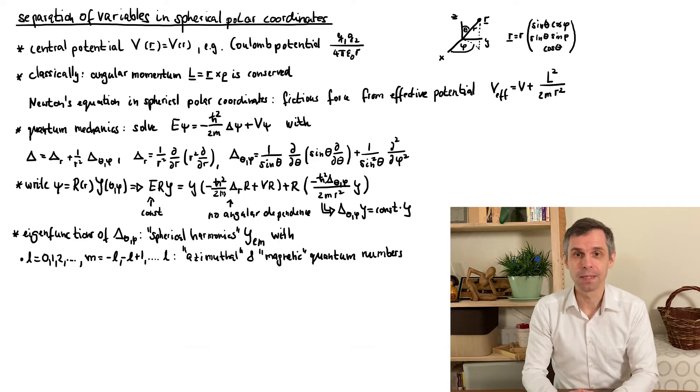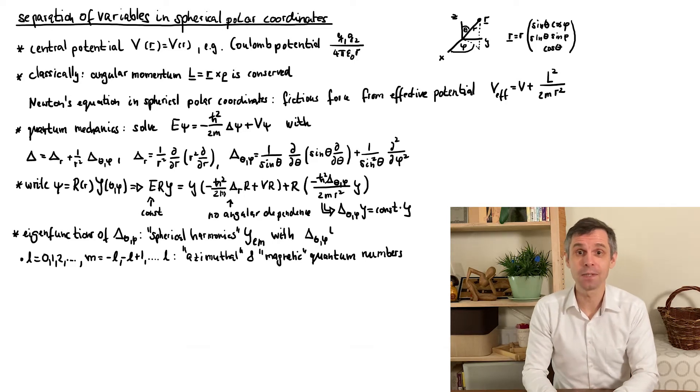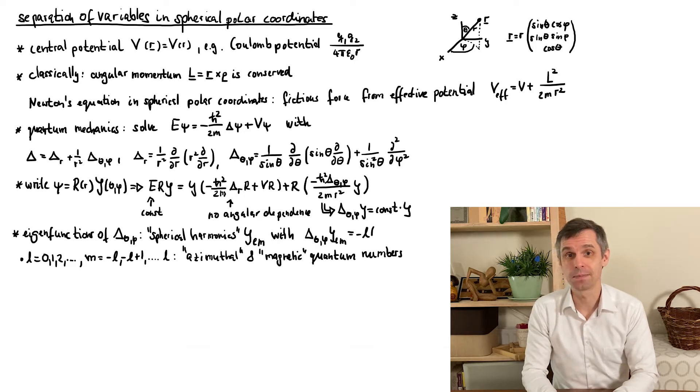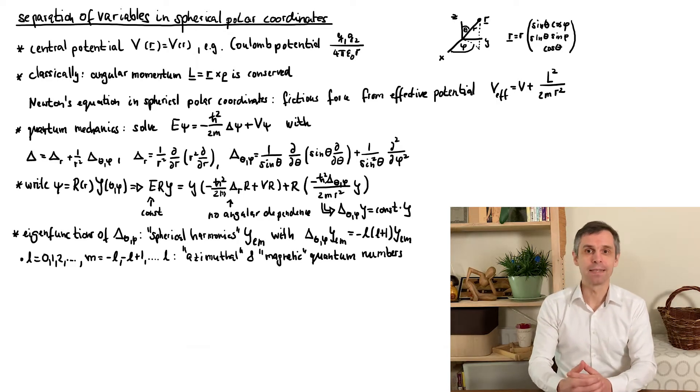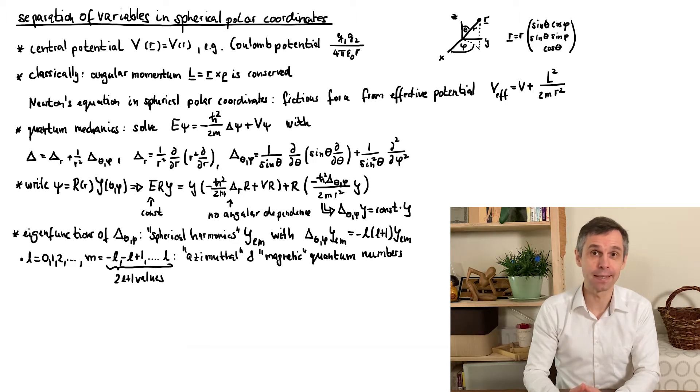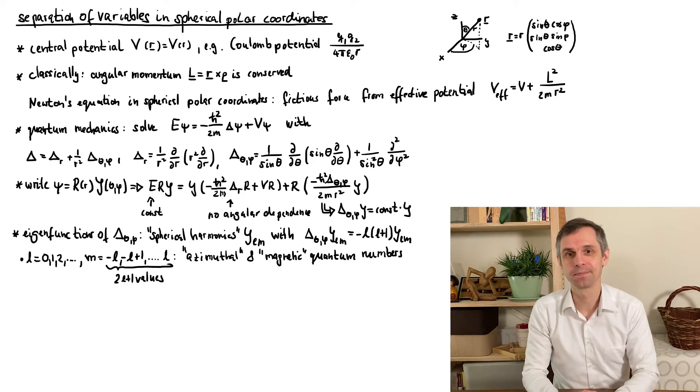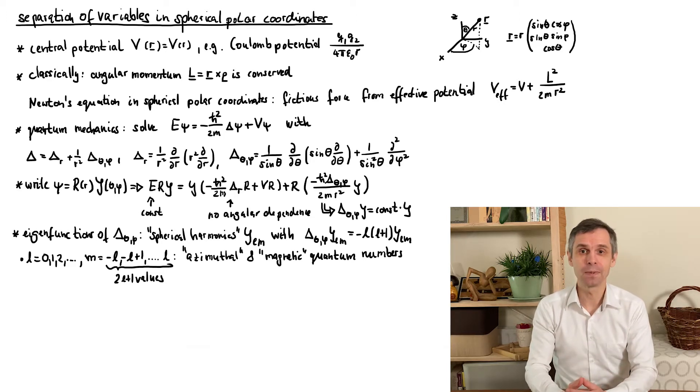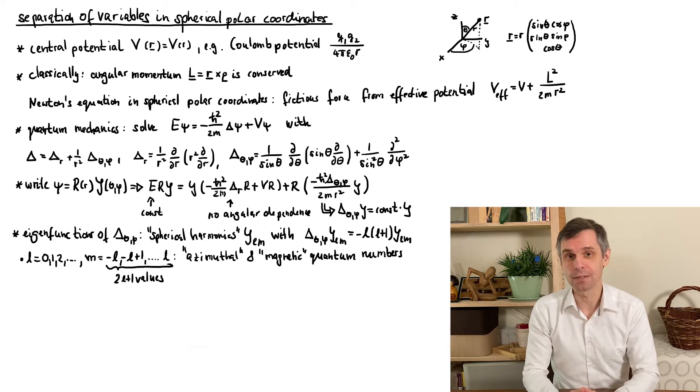The azimuthal quantum number L fixes the eigenvalue of the angular Laplace operator. M is an extra index that takes two L plus one values running from minus L in integer steps to plus L. So there is a 2L plus one fold degeneracy in this eigenvalue problem. We will soon see how we can lift this degeneracy by magnetic field, hence the name magnetic quantum number.